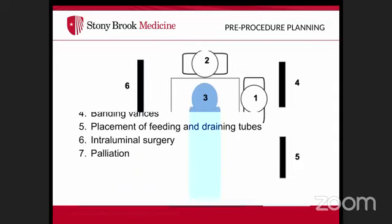When taking the patient to the endoscopy suite, they should be on telemetry and pulse oximetry, placed in the left lateral position. The anesthetist or anesthesiologist is at the head of the bed. The endoscopist stands in front of the patient. The tower and auxiliary video tower are behind the endoscopist, with a monitor in front for viewing during the procedure.